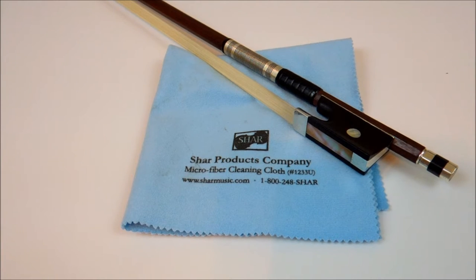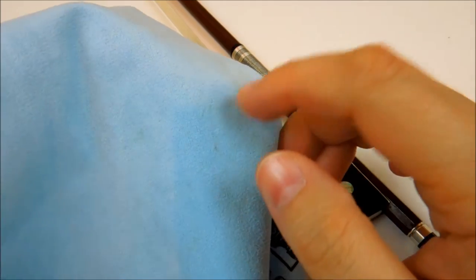Hi everyone, today I'm going to show you how I clean my bow. This process usually takes a few seconds, so let's get started. To clean my bow, I like to use a microfiber cloth. The one I have is from Shar Music, but you can really use any cloth you like.